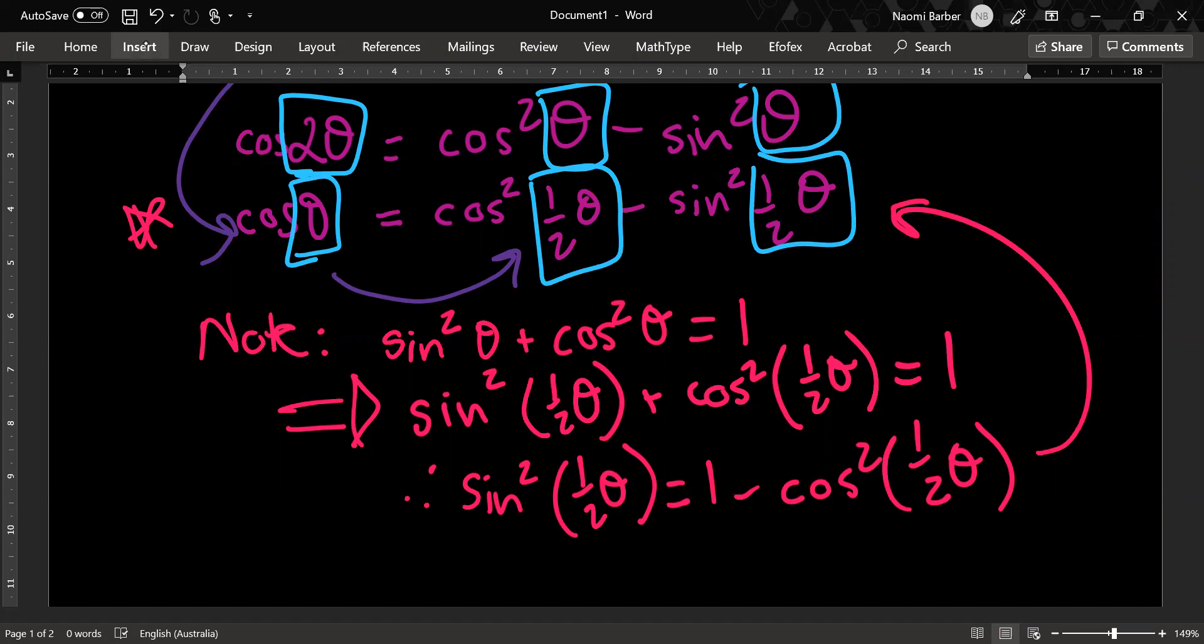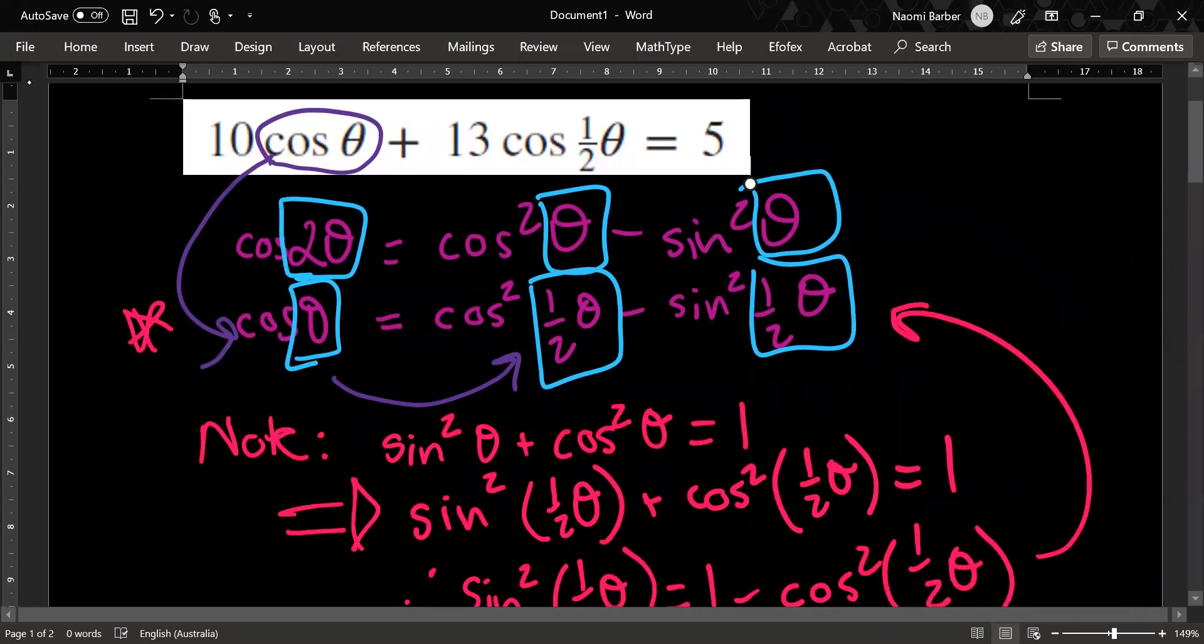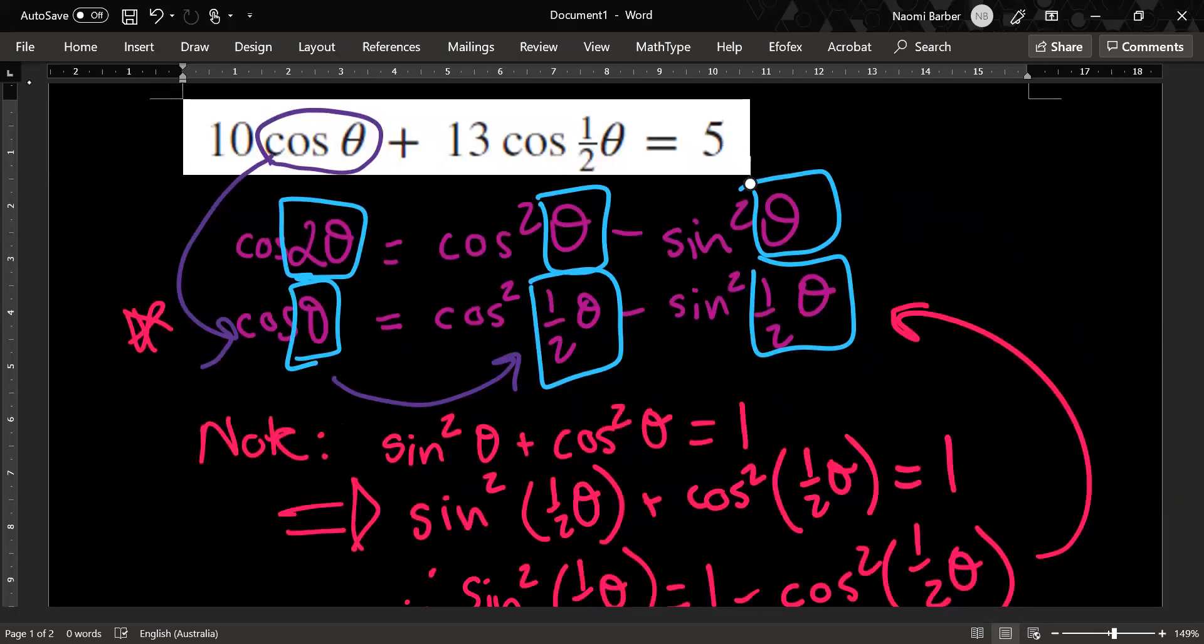Let us take a moment to look at the equation again. So I've got 10 cos theta, which I want to rewrite in terms of cos squared half theta plus 13 cos half theta equals 5. If I rewrite my cos theta in terms of cos squared half theta, that's like x squared. Then my cos half theta is like x and I can move the 5 over to be minus 5 and then I can use a quadratic.